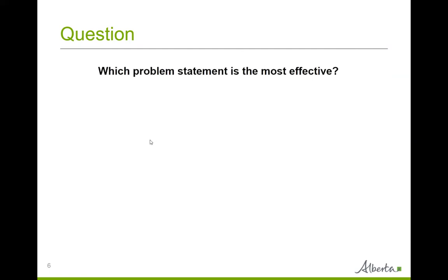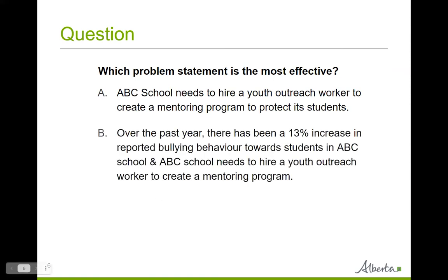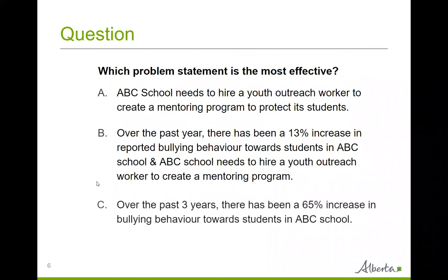Now we have a short question for you. Which problem statement is the most effective? A: ABC school needs to hire a youth outreach worker to create a mentoring program to protect students. B: Over the past year, there has been a 13% increase in reported bullying behavior towards students in ABC school, and ABC school needs to hire a youth outreach worker to create a mentoring program. C: Over the past three years, there has been a 65% increase in bullying behavior towards students in ABC school. I'm going to give you a few seconds to answer this question. If you need more time, you can pause the video.